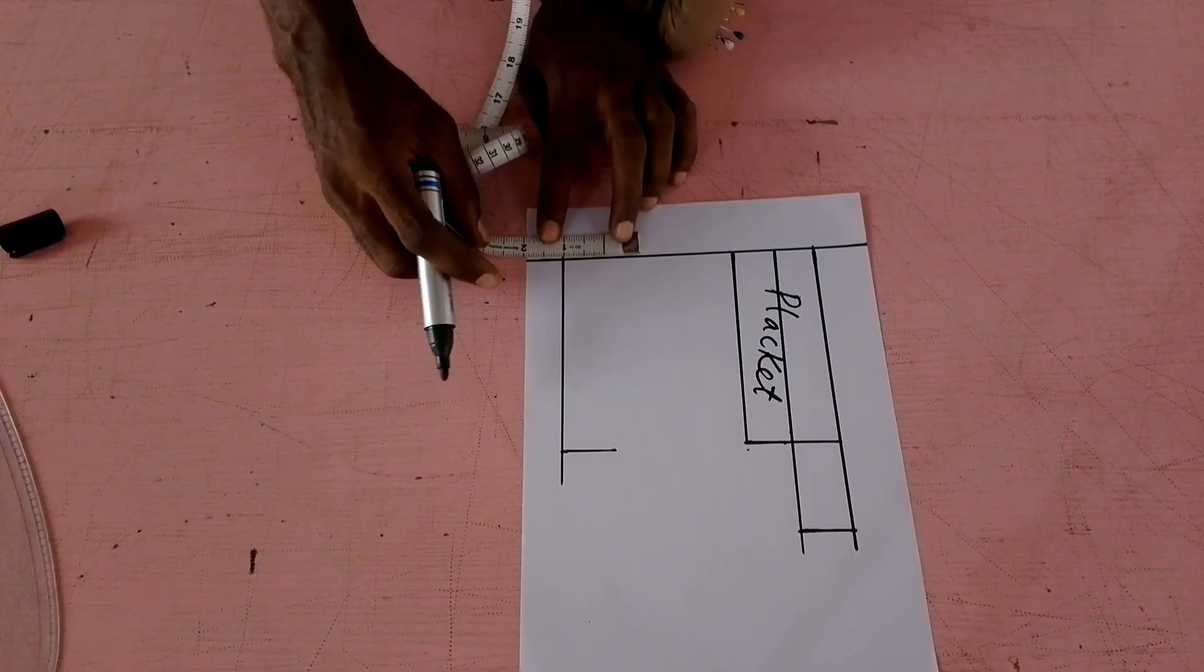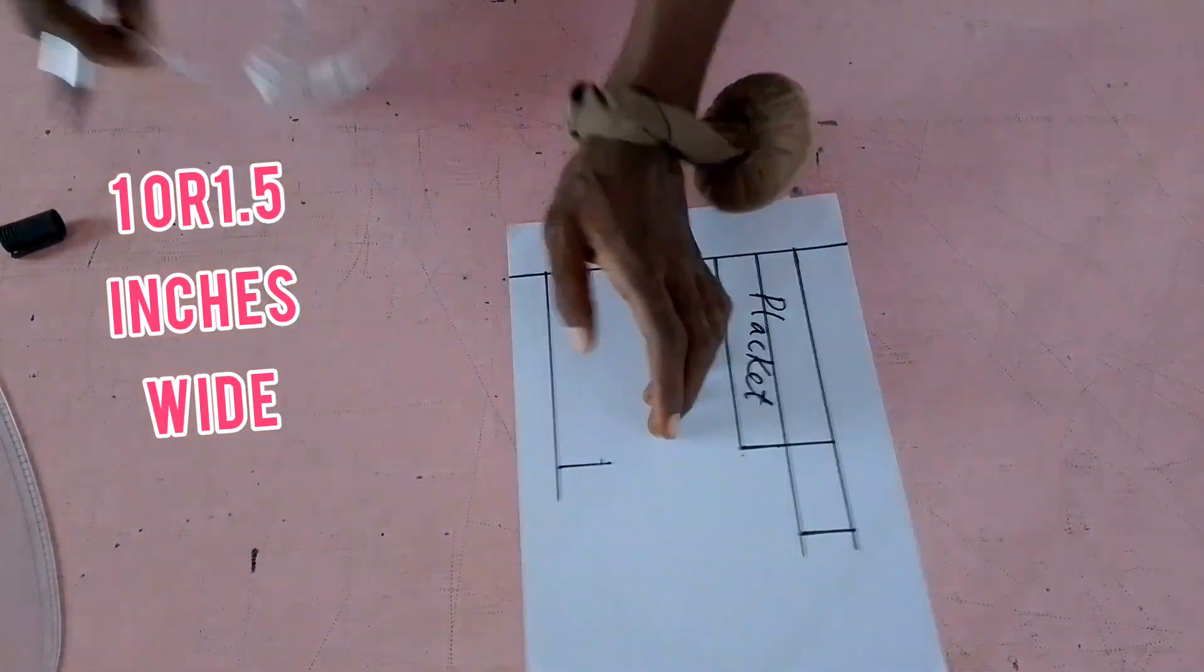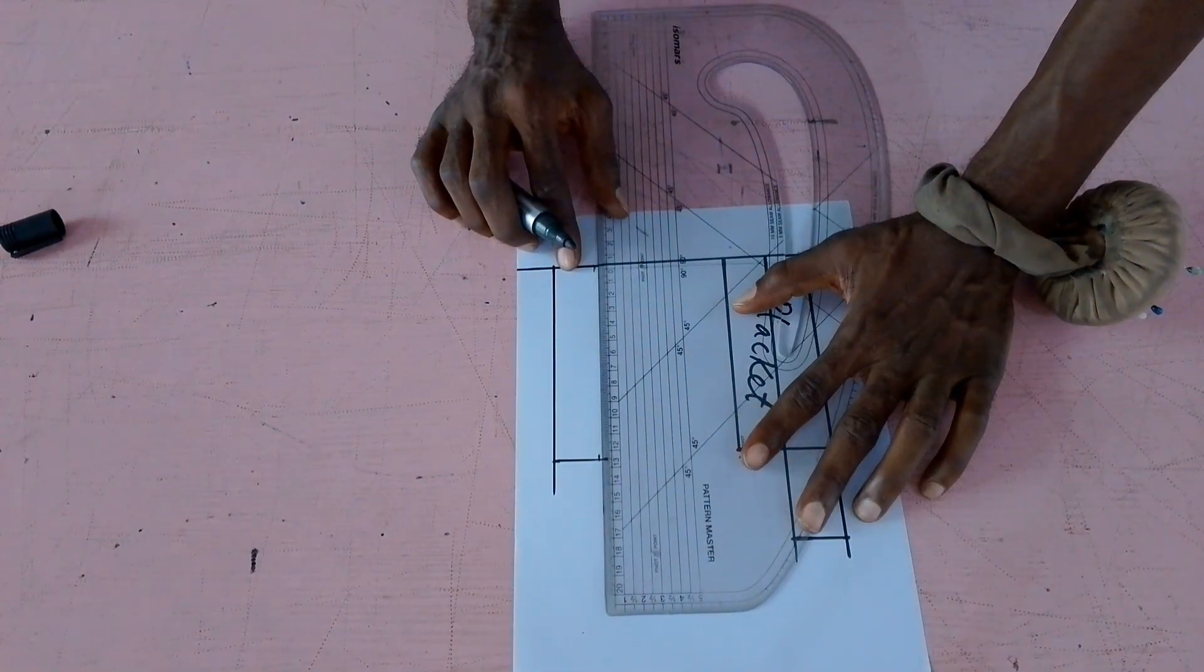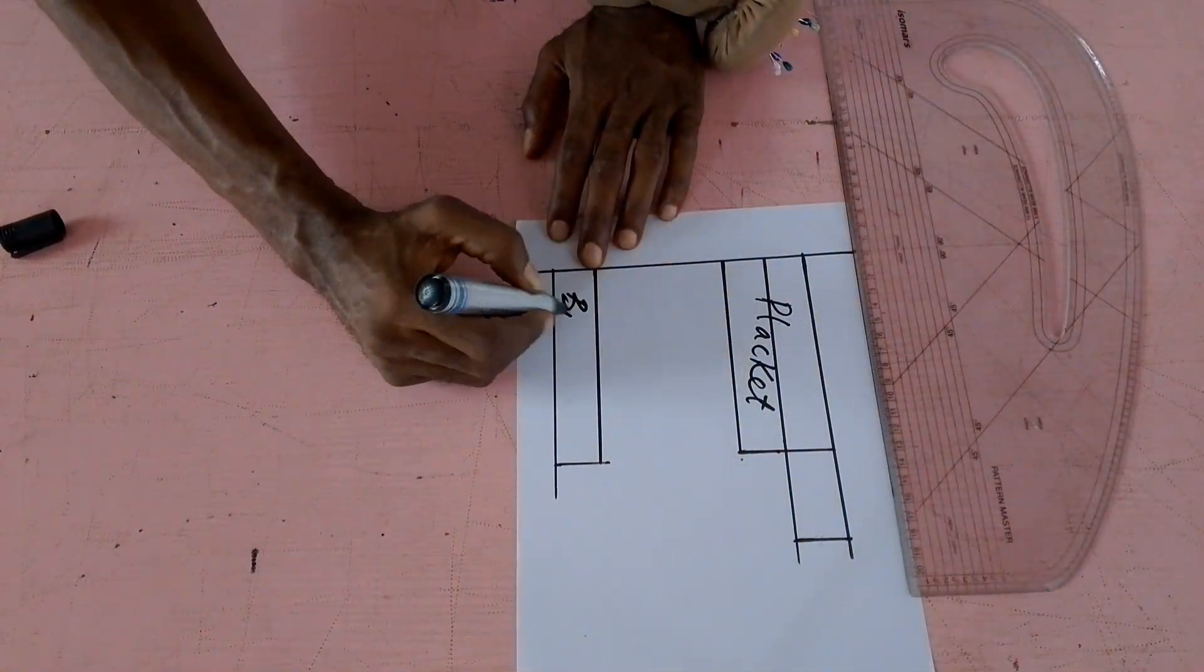How wide? It's about one inch to one point five. Although for this work that I'm working on, I'm doing one inch because I want it to be very tiny. And there you go, that is the binding.